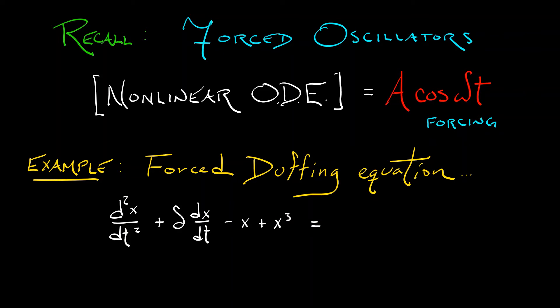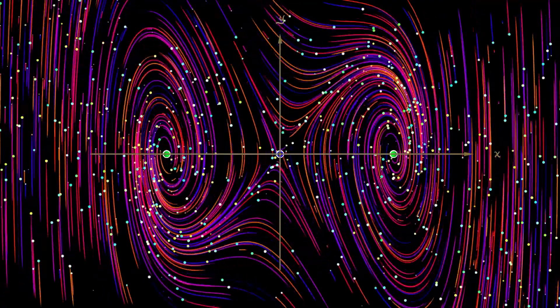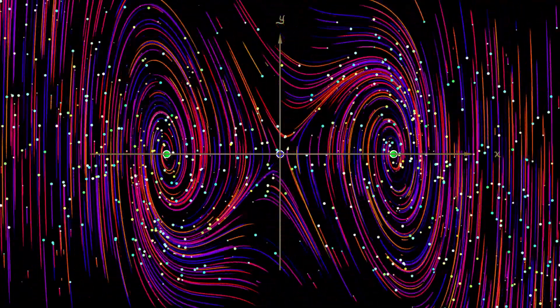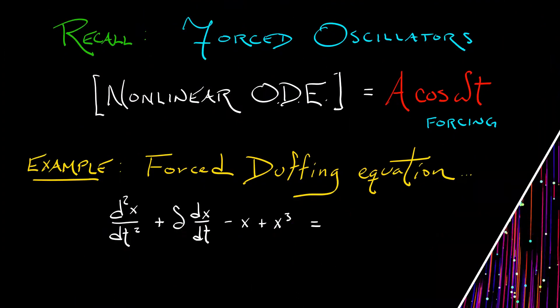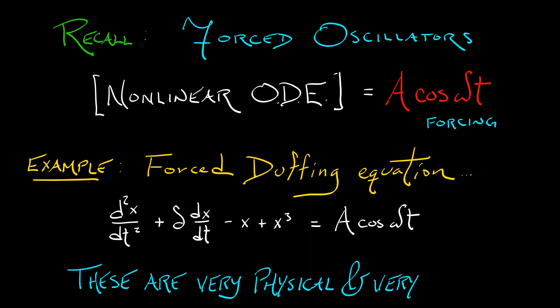Now, when we set that right-hand side equal to 0, then depending on the value of delta, we either had just one equilibrium or we had three equilibria. But what we're going to do now is set the right-hand side equal to something of the form a cosine omega t. We're going to force the system or shake it. Now, these types of forced oscillators are very physical and can be very chaotic.